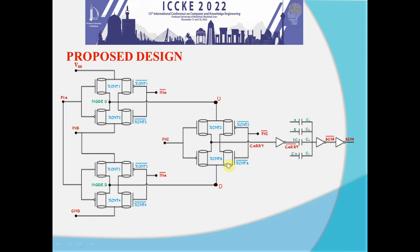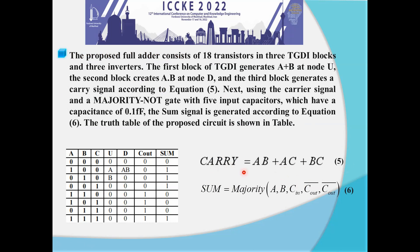On this page, we have the proposed design presented. The proposed full adder consists of 18 transistors in three TGDI blocks and three inverters. The first block of TGDI generates A XOR B at node U. The second block creates AB at node D, and the third block generates a carry signal according to equation 5. Next, using the carry signal and the majority NAND gate with five input capacitors, which have a capacitance of 0.1 fF, the sum signal is generated according to equation 6. The truth table of the proposed circuit is shown in the table.